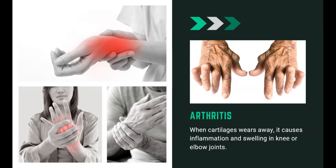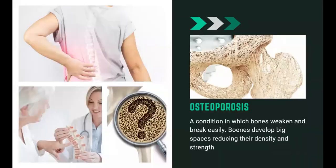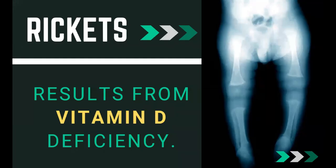Arthritis is when cartilages wear away, causing inflammation and swelling in the knee or elbow joints. Scoliosis refers to the abnormal curvature of the spine. Osteoporosis is the condition in which bones weaken and break easily — bones develop big spaces, reducing their density and strength. Rickets results from vitamin D deficiency; vitamin D promotes calcium absorption, and rickets distorts and softens the bones.